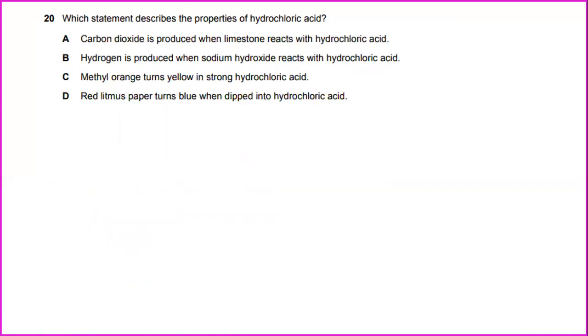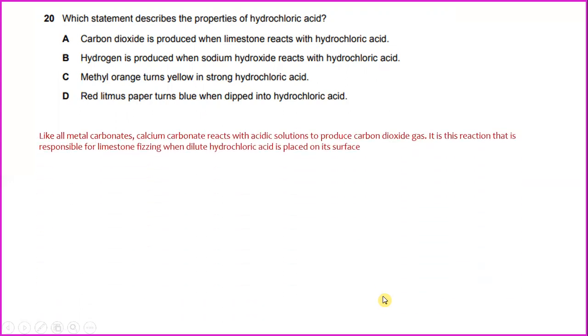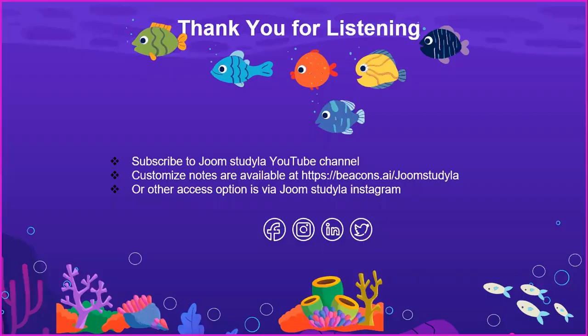Which oxide is classified as amphoteric? The answer will be aluminum oxide is amphoteric. It has reactions as both base and acid. Number 20, which statement describes the properties of hydrochloric acid? Like all metal carbonates, calcium carbonate reacts with acid solutions to produce carbon dioxide gas. It is this reaction that is responsible for limestone fizzing when dilute hydrochloric acid is placed on its surface. The answer will be A. Carbon dioxide is produced when limestone reacts with hydrochloric acid.